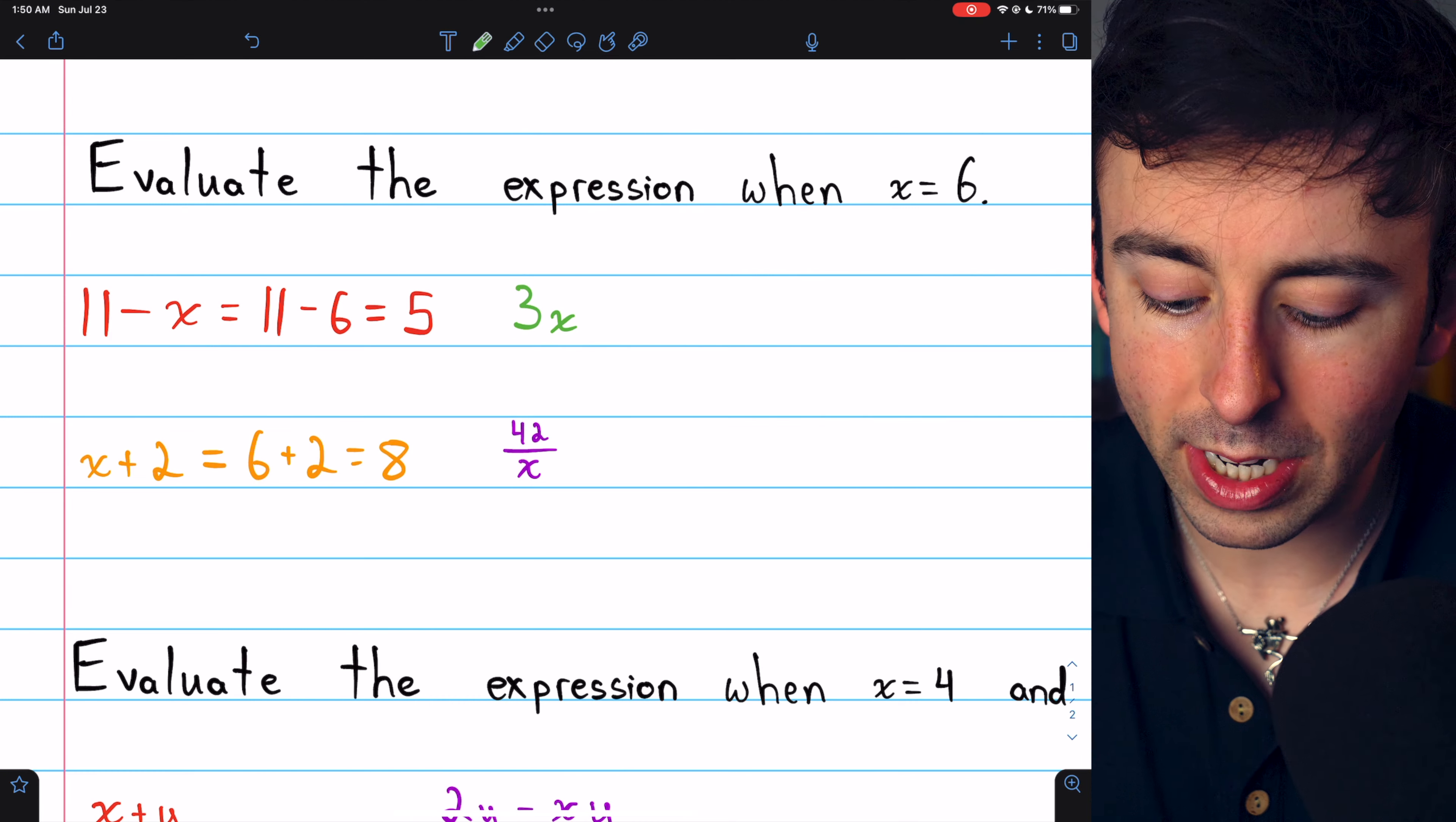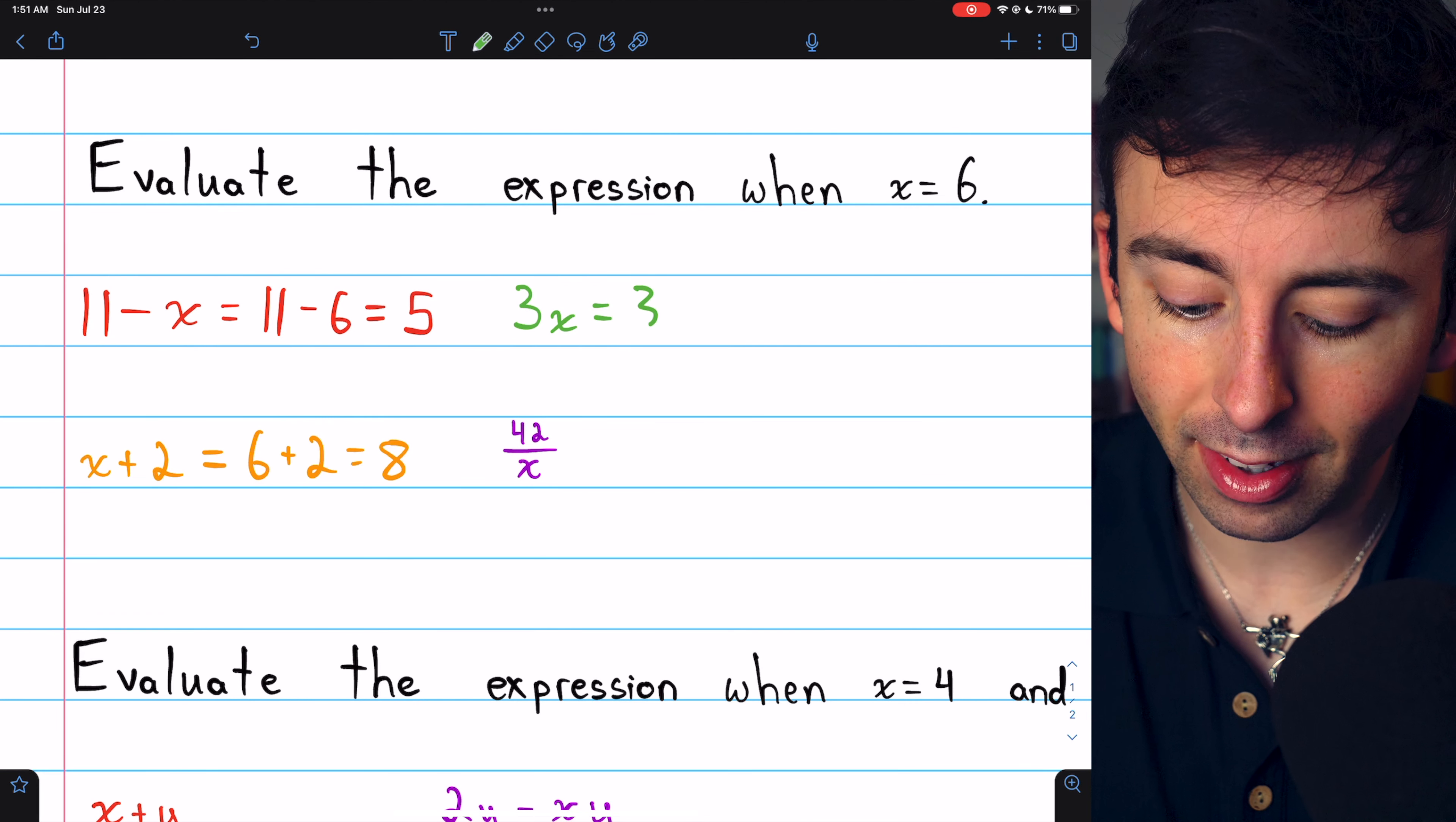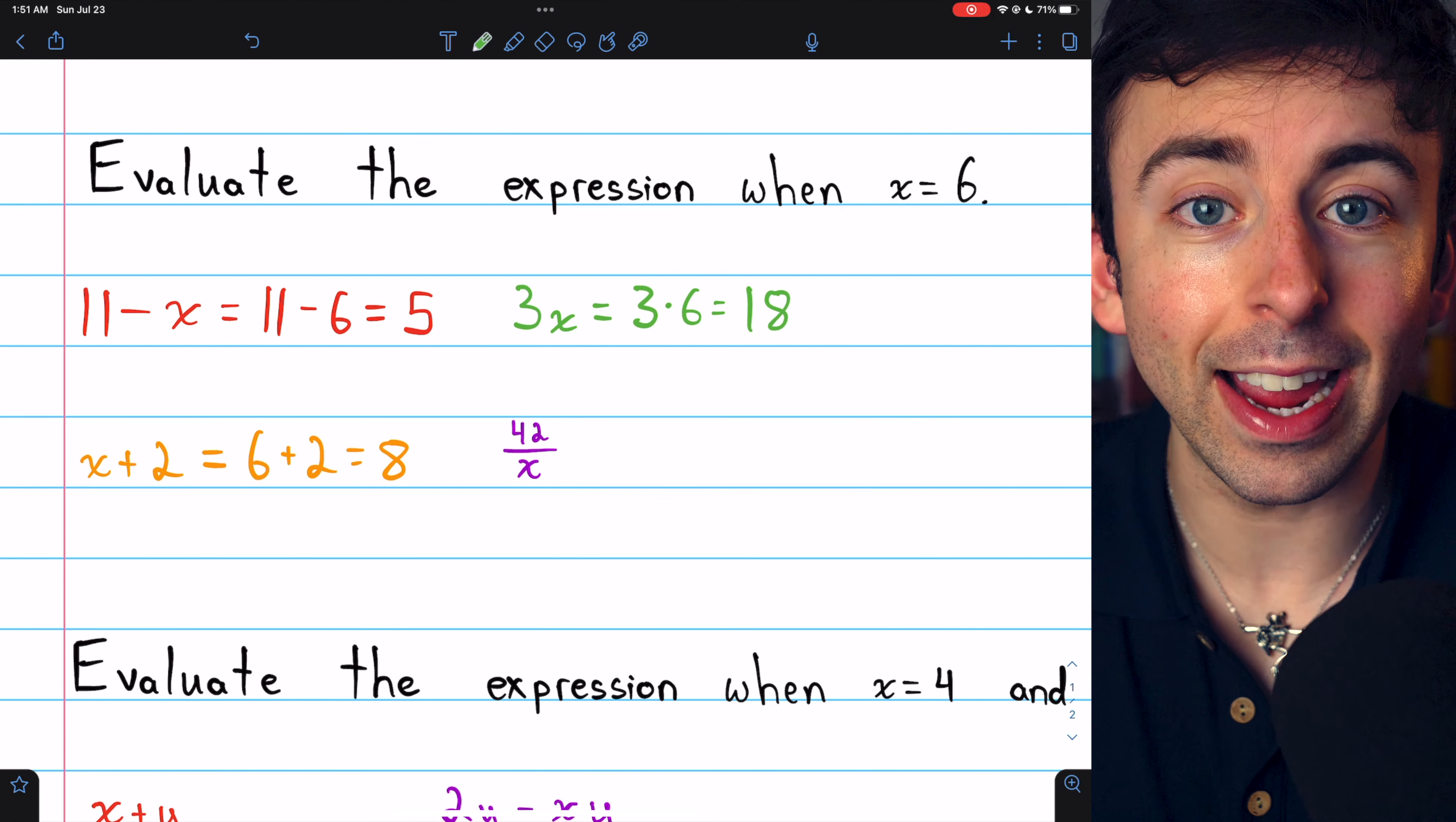Similar thing for 3x. This is multiplication. x is 6, so this is 3 times 6, which is 18.